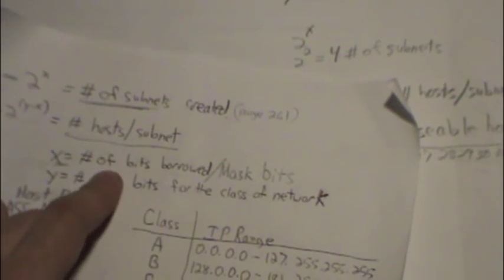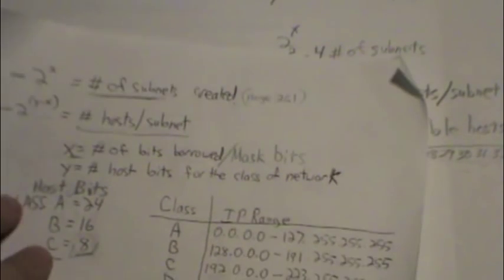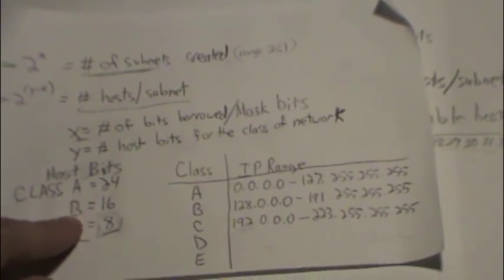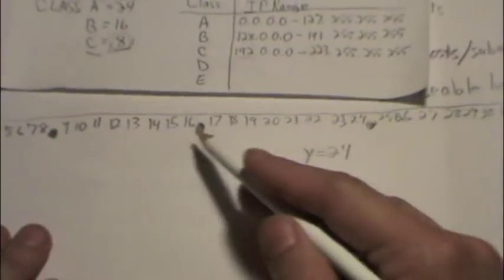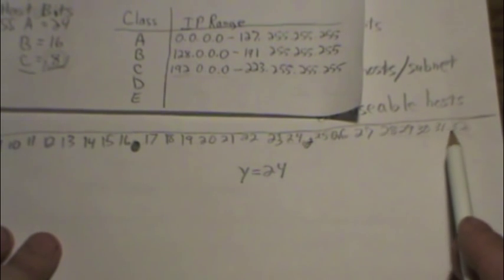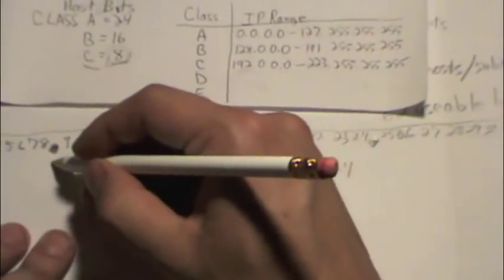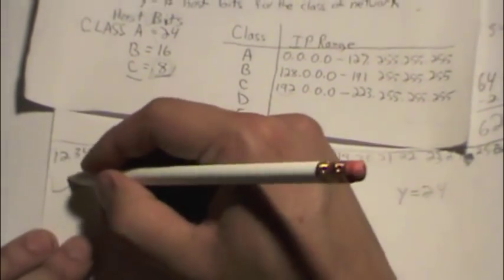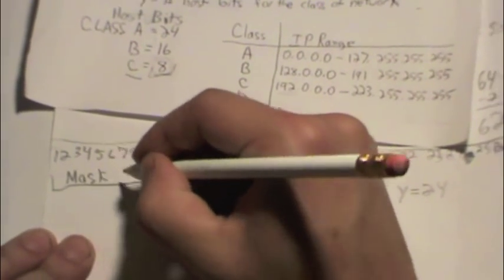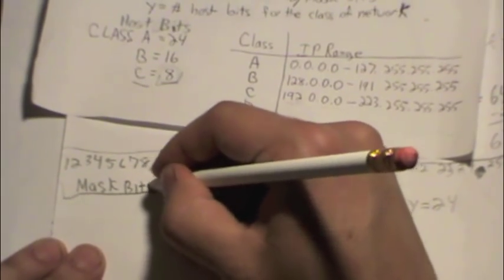Again, our y value. Remember, the mask bits come from the left and the host bits come from the right. So if we count 24 bits this way, we have 8 bits this way, 16 if we get into the second octet here. That takes us all the way to 24 bits, making this your mask bit and the rest of this entire area is your host bits.